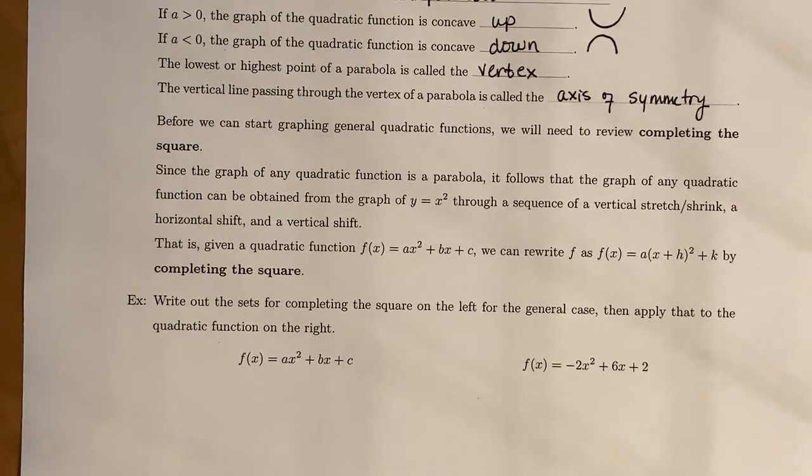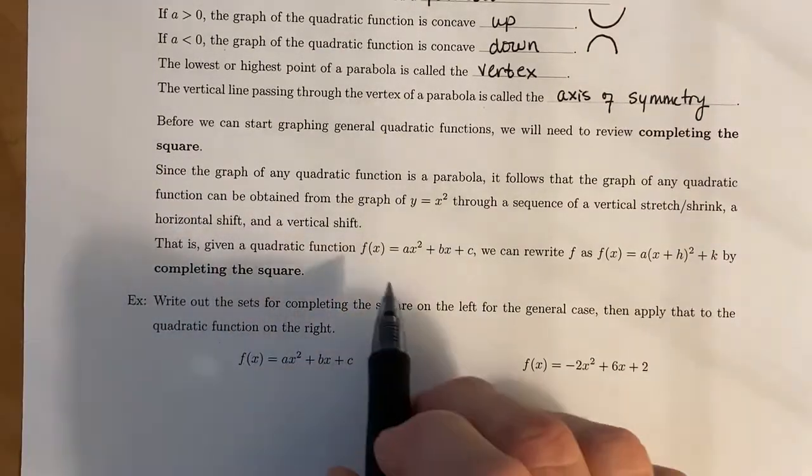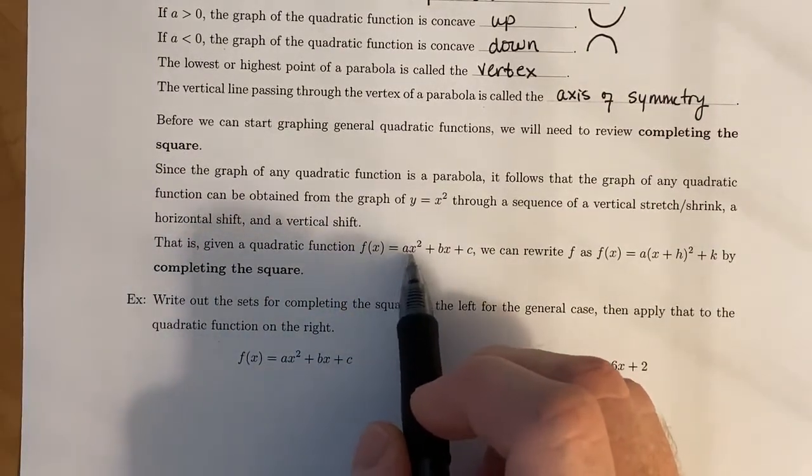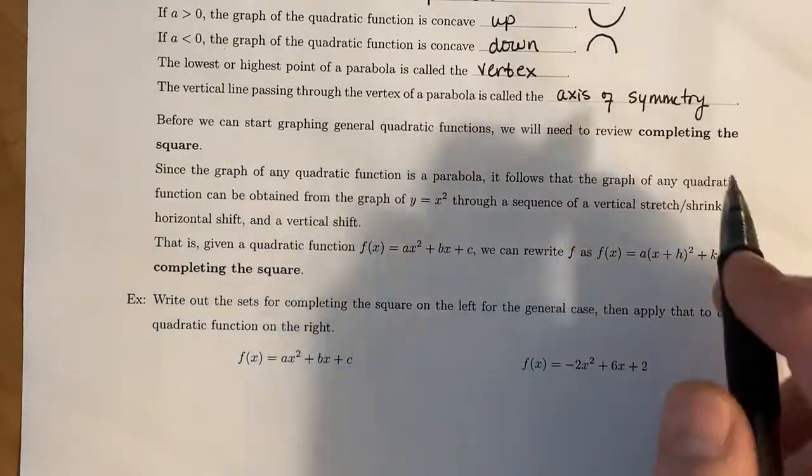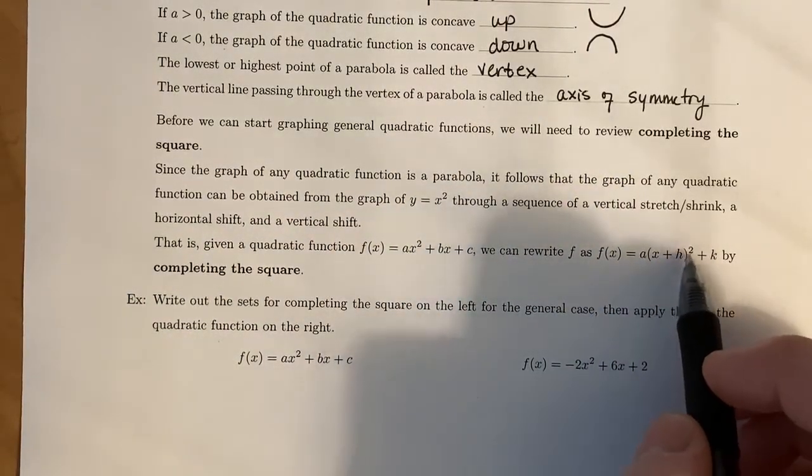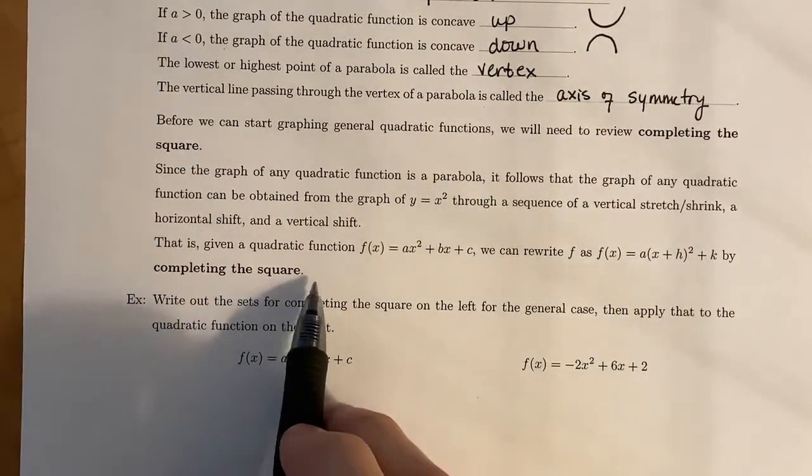Now we're going to have to review something that might be a little bit tricky, but hopefully you've seen it before and we can work through it. Before we can graph parabolas, or quadratic functions, we need to review completing the square. And the reason behind that is because the graph of any quadratic function is a parabola, and since all parabolas are really just stretched versions of each other, or shifted versions vertically or horizontally, we'll have to convert our function f(x) in this form, ax² + bx + c, into a different form, where it's a(x + h)² + k. And we're going to accomplish that by completing the square.